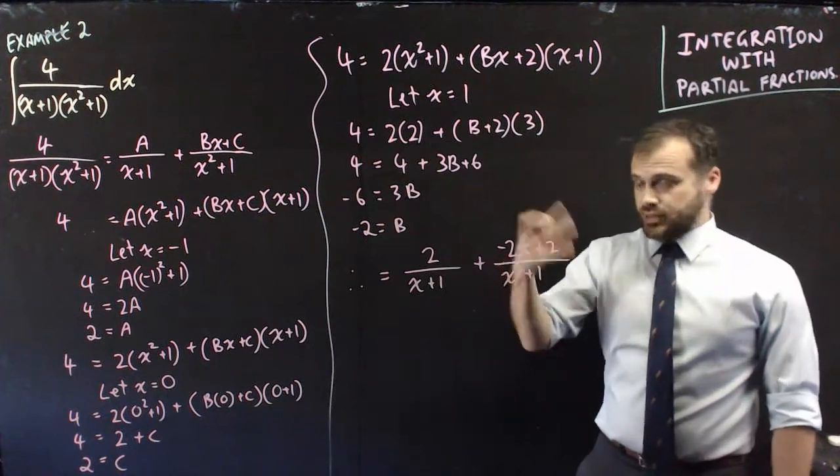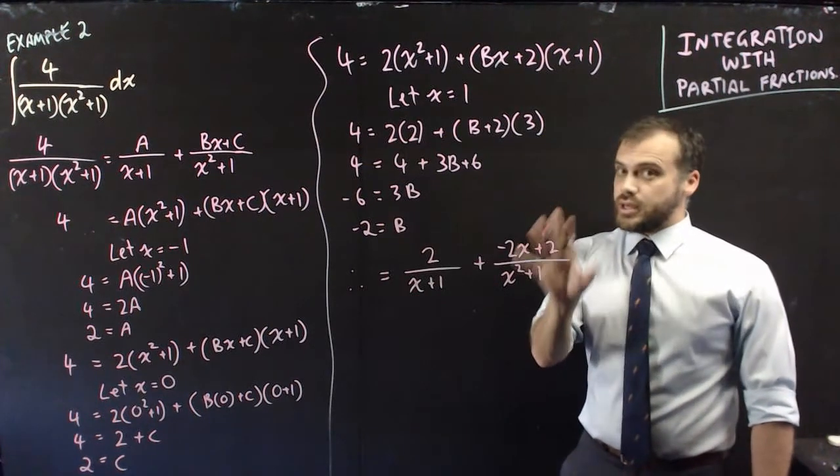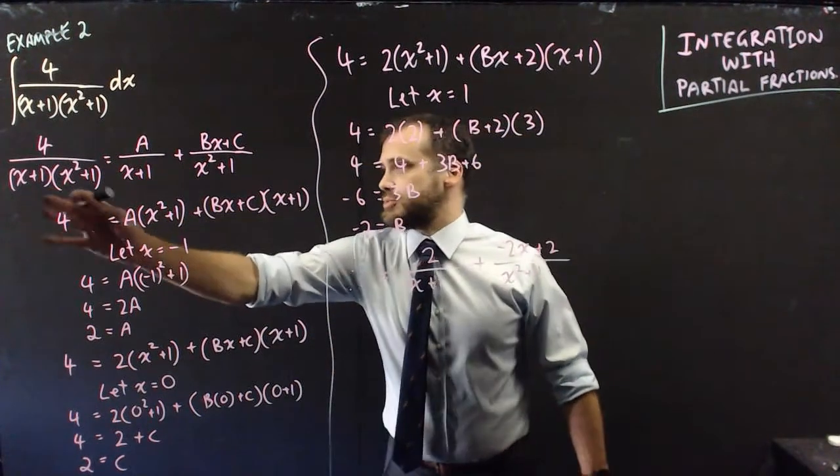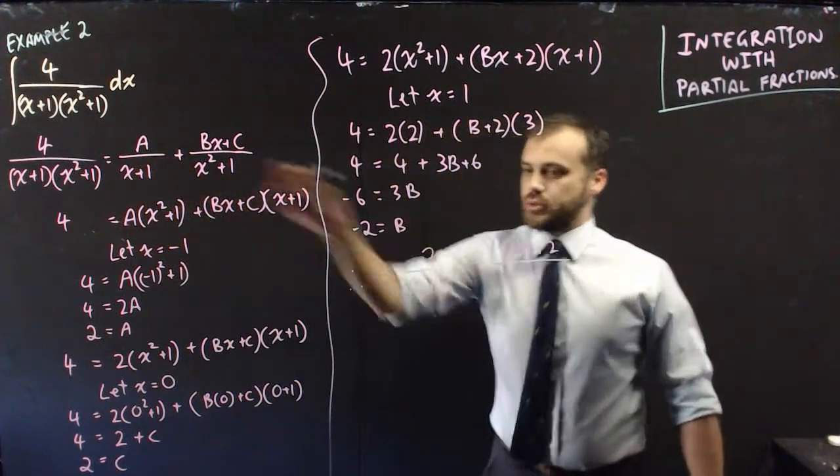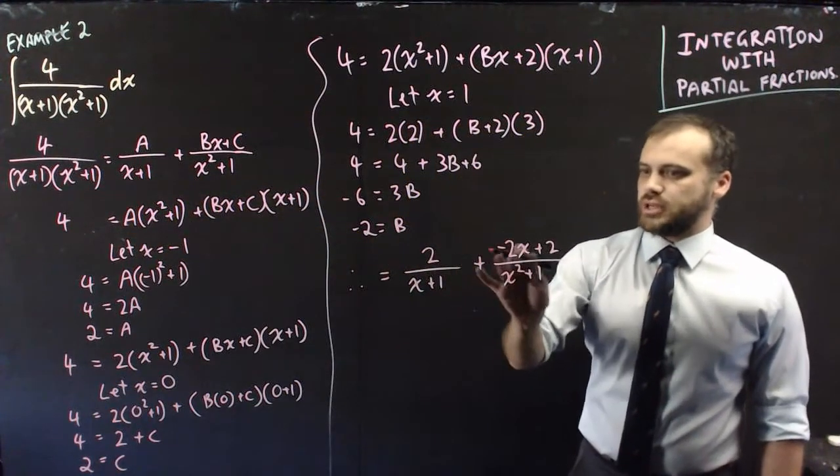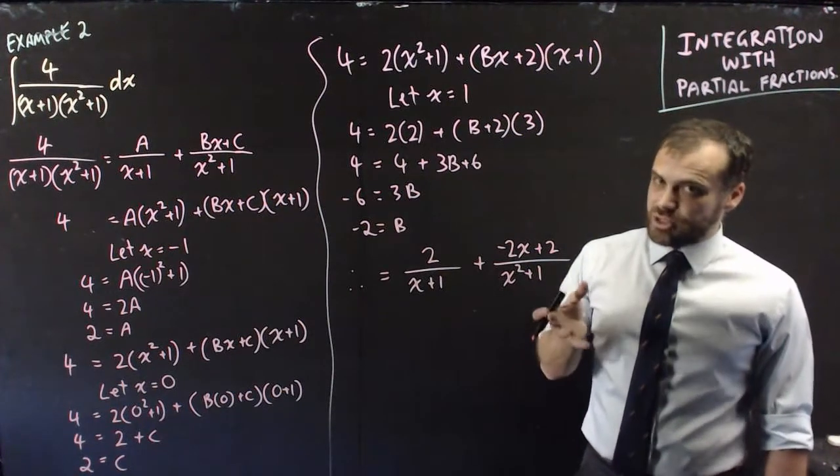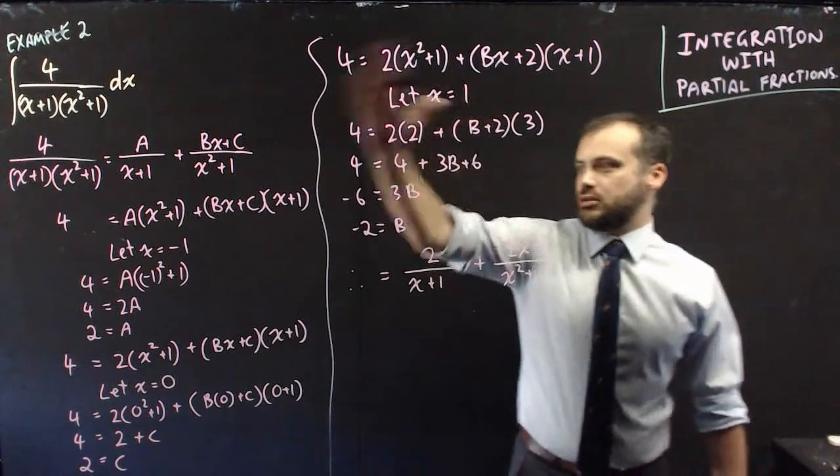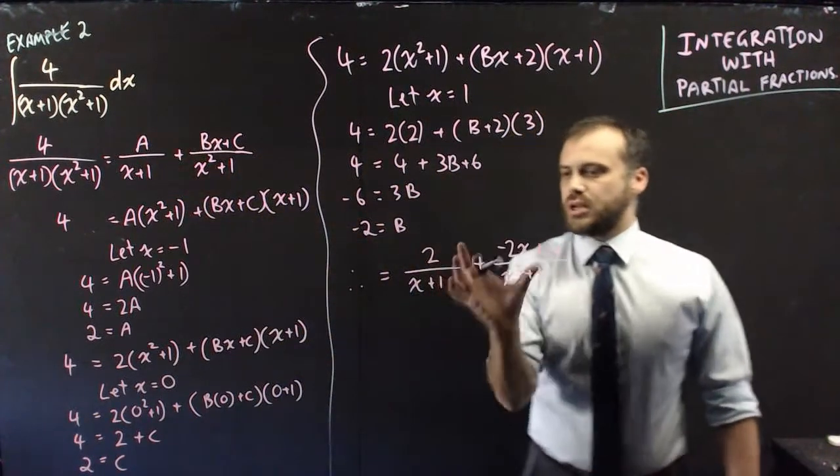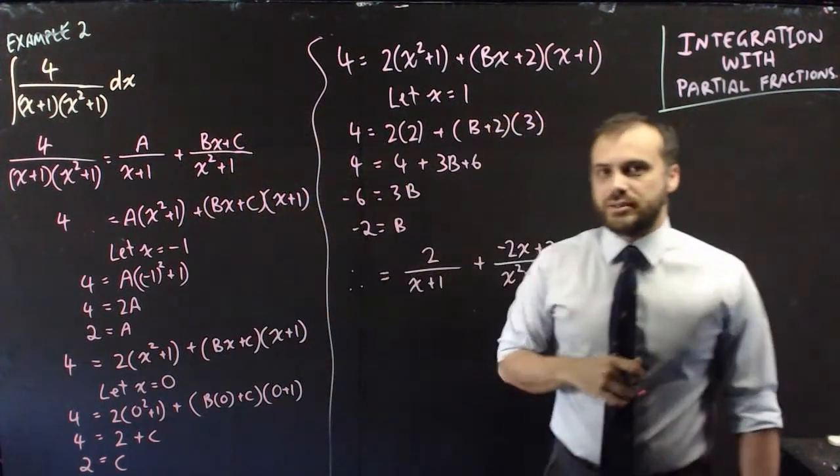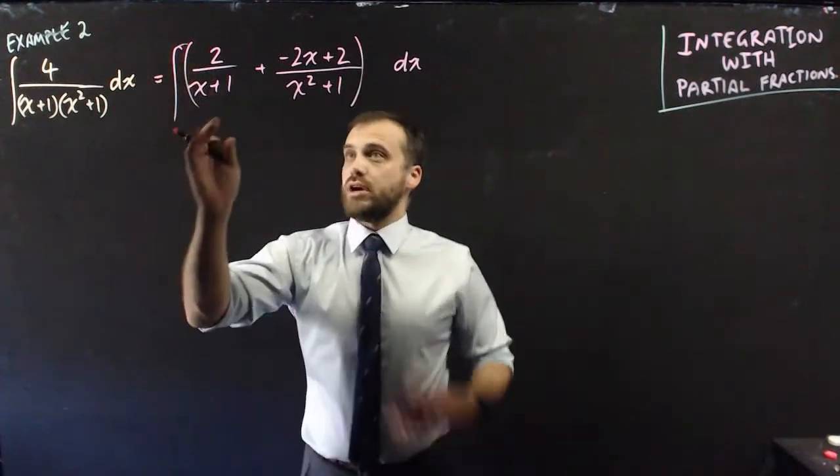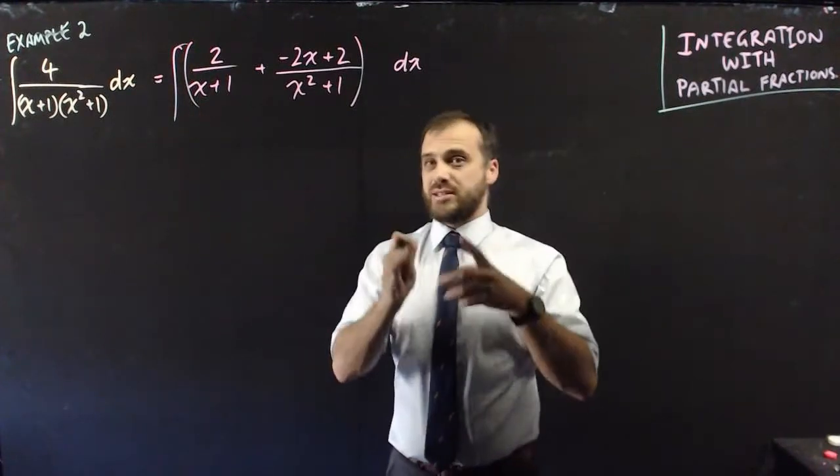Looks like I got it. That's it. That's the end. We can now say that 4 over x plus 1 x squared plus 1 equals 2 over x plus 1 plus negative 2x plus 2 over x squared plus 1. That's the partial fractions bit. Now we need to do the integration bit. So I'm just going to rub off all this partial fractions bit. I'm just going to move this up to here. So we've got something like this. We're integrating all of that stuff with respect to x.